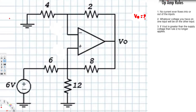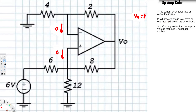In this video we are going to see an example on an op-amp circuit. In an op-amp circuit, if you remember these three rules it will make everything easier. The first rule is no current ever flows into or out of the inputs, so we know that current at both inputs is zero.